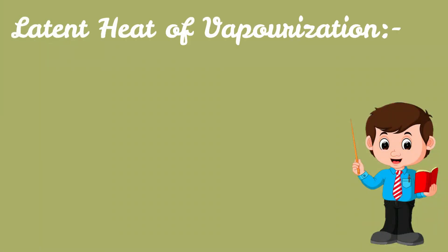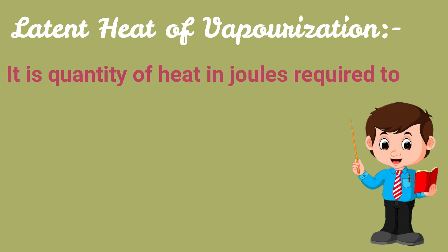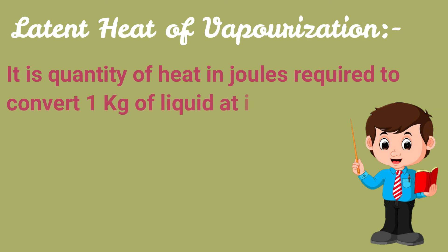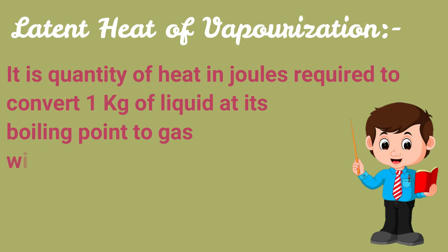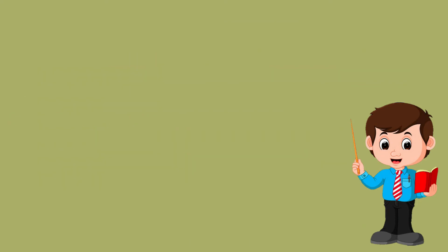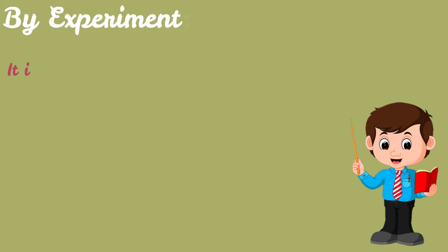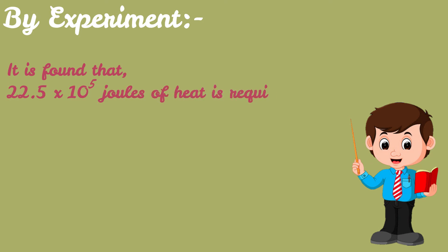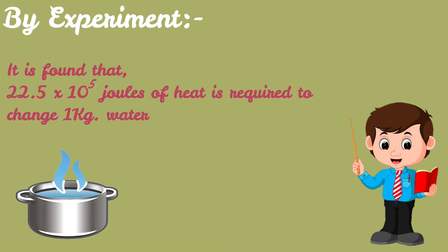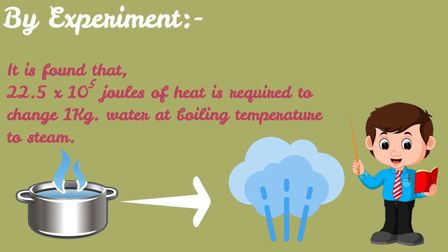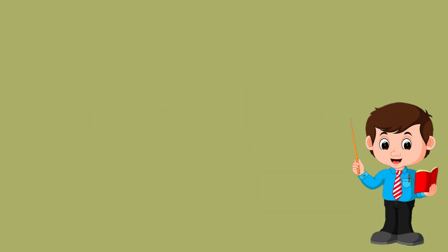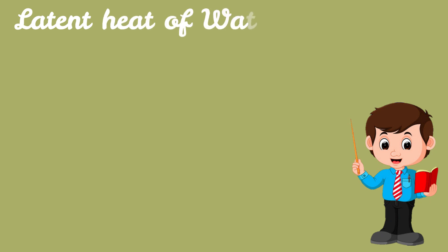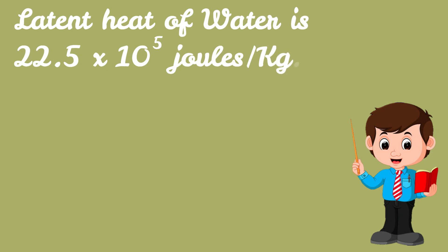The latent heat of vaporization of a liquid is the quantity of heat in joules required to convert 1 kilogram of the liquid at its boiling point to vapor or gas without any change in temperature. It has been found by experiments that 22.5 × 10⁵ joules of heat is required to change 1 kilogram of water at its boiling point of 100°C to steam at the same temperature of 100°C. So the latent heat of vaporization of water is 22.5 × 10⁵ joules per kilogram.